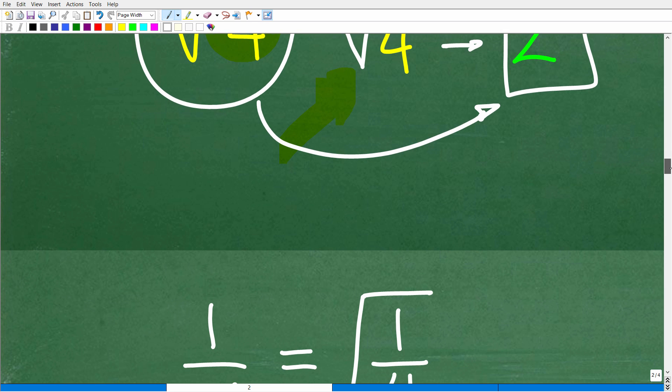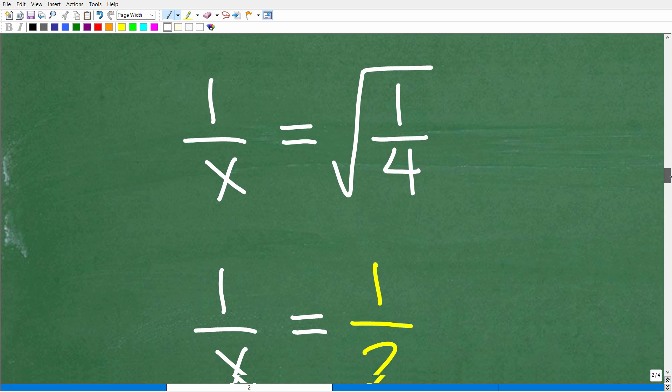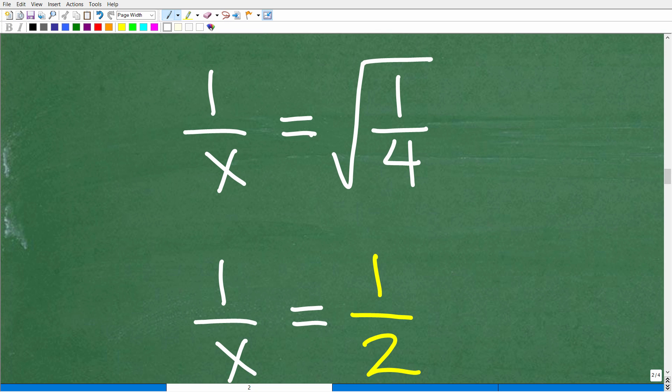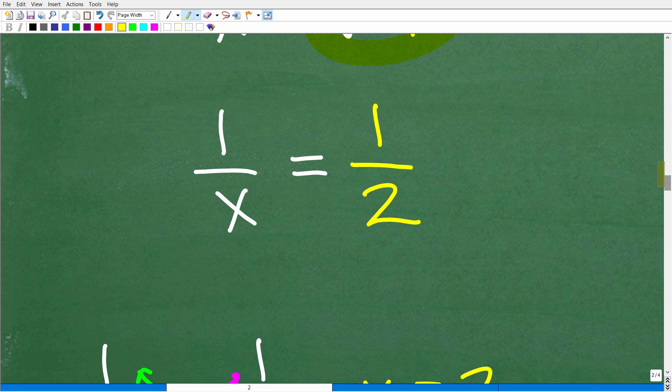Okay, so right now we figured out that the square root of one-fourth is equal to one-half. Okay, so this now is going to become quite easy.